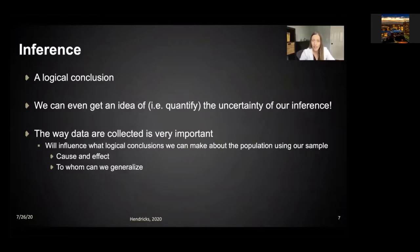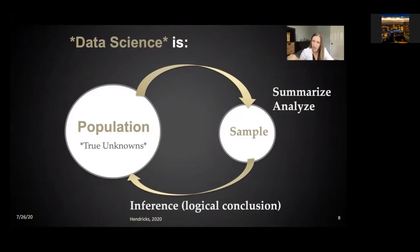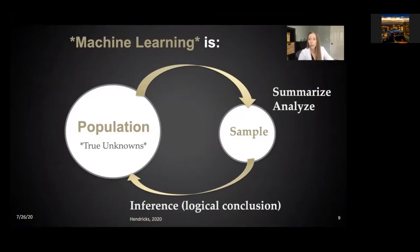Can we make a cause and effect conclusion? To whom can we generalize from our statistical analysis? This general framework of statistics also holds true for data science — in data science we are also gathering information from a population, taking a smaller sample, doing something to that, and trying to make a logical conclusion back. And for machine learning, it's incredibly important to remember that whatever we are doing or trying to predict, we need to be very aware of the population from which we sample. I'm going to be talking about two major topics for inference today: cause and effect and generalizability.